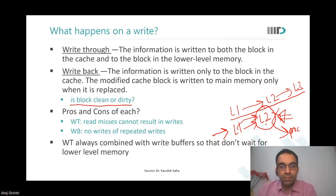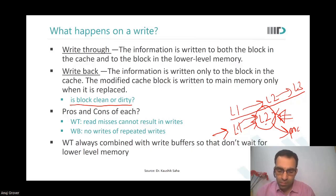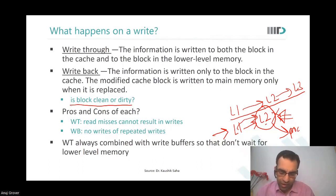Student: Under pros and cons of write-through, it says 'read misses cannot result in writes.' Why is that? Because if there is a read miss in L1 cache, we look into the other cache hierarchy and finally the main memory. Once we retrieve that data from main memory, aren't we supposed to place it in the complete cache hierarchy? Professor: So if there is a read miss, what do you do? You go to the next level of memory and read from there.